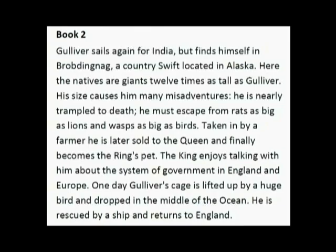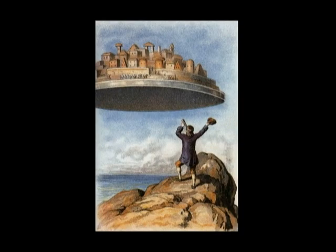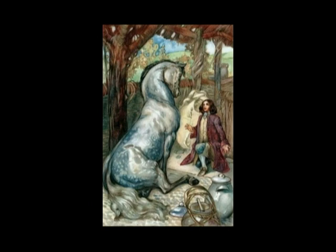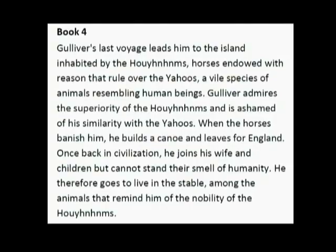Gulliver's ship is attacked by pirates and he arrives at a flying island called Laputa. 'Laputa' is Spanish — 'puta' means prostitute, so 'the prostitute.' We are going to see why it is called that. This is a place where there are scientists who have crazy ideas. Then he leaves the island, arrives in Japan, and goes back to England. In the fourth and last travel, he finds a place inhabited by the so-called Houyhnhnms — intelligent horses governing a place where a race of beings similar to human beings, called Yahoos, live. These Yahoos are really savages.